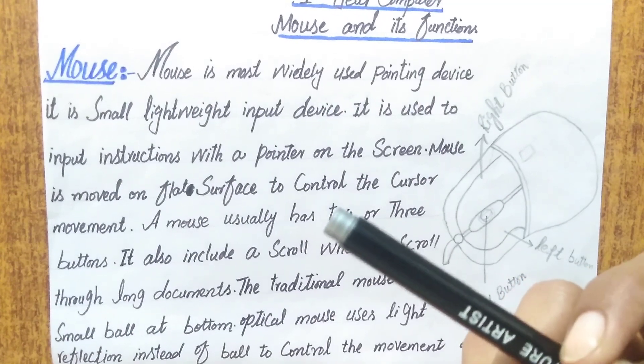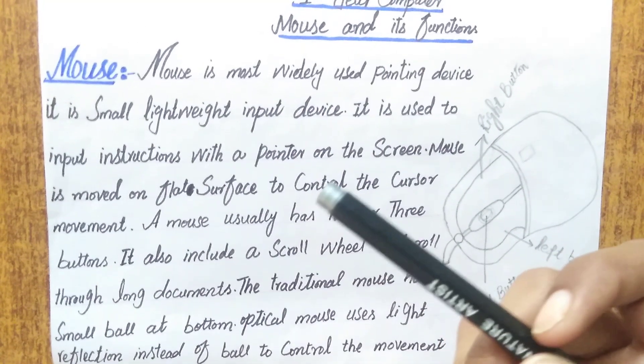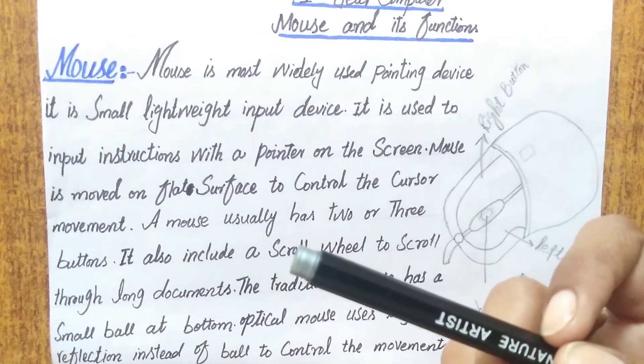Basically there are two or three buttons on it and a scroll wheel which is used for your documents.